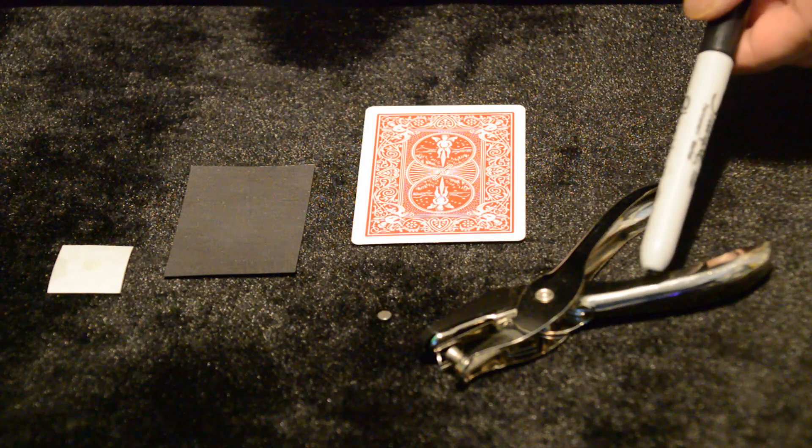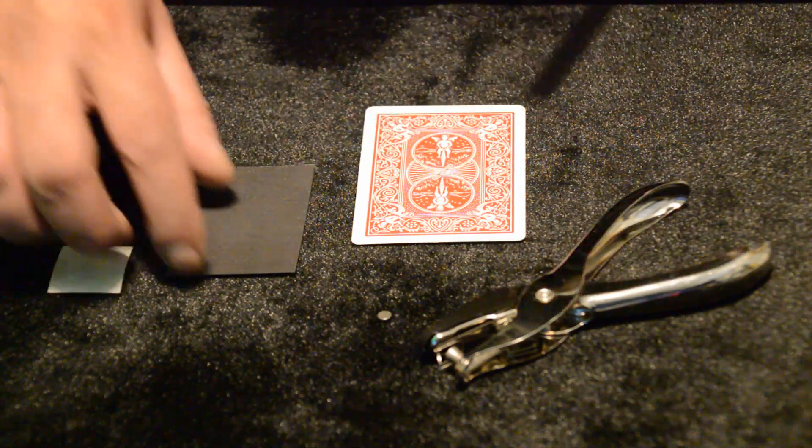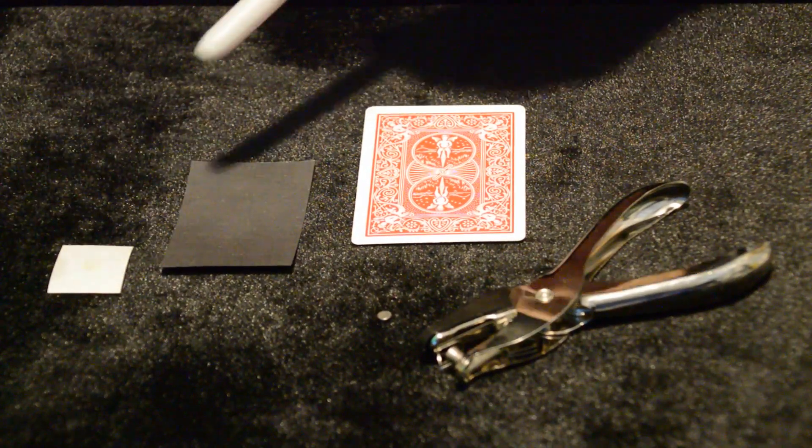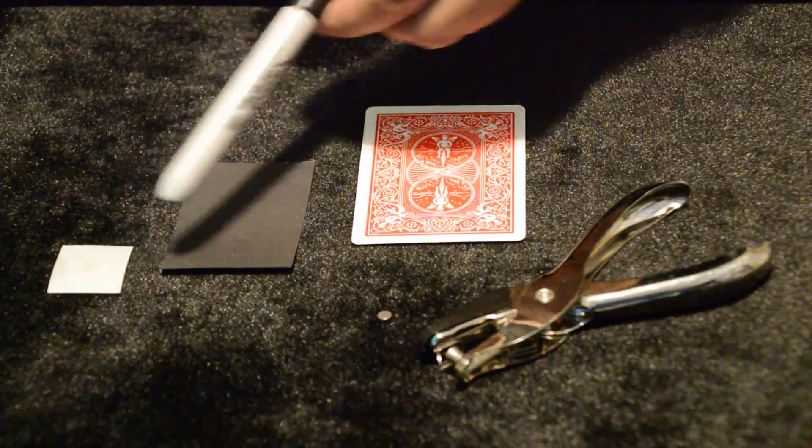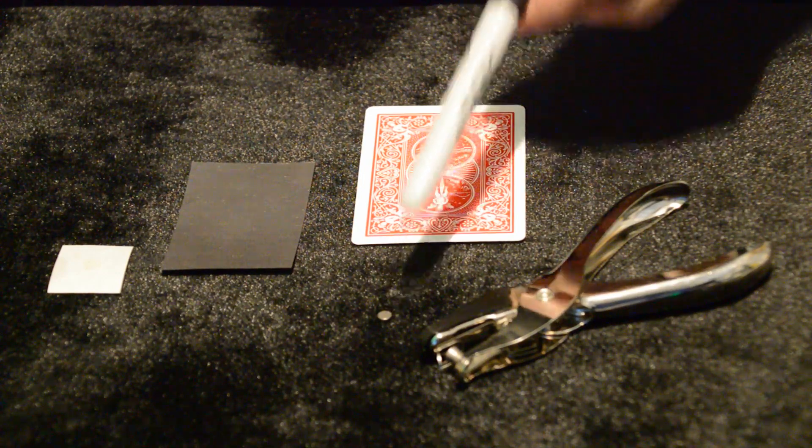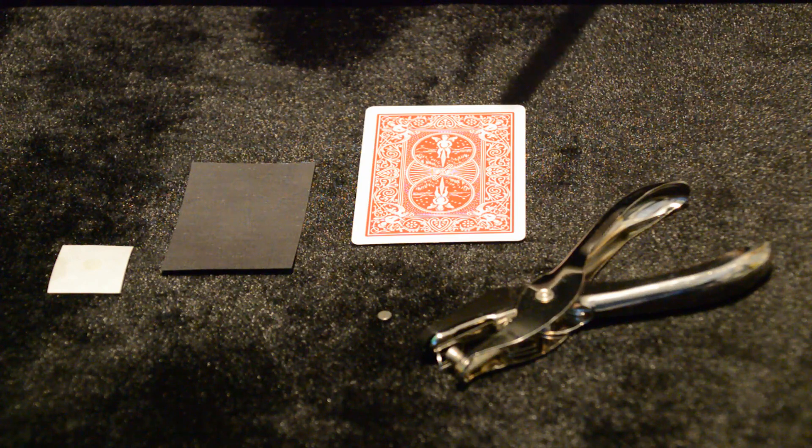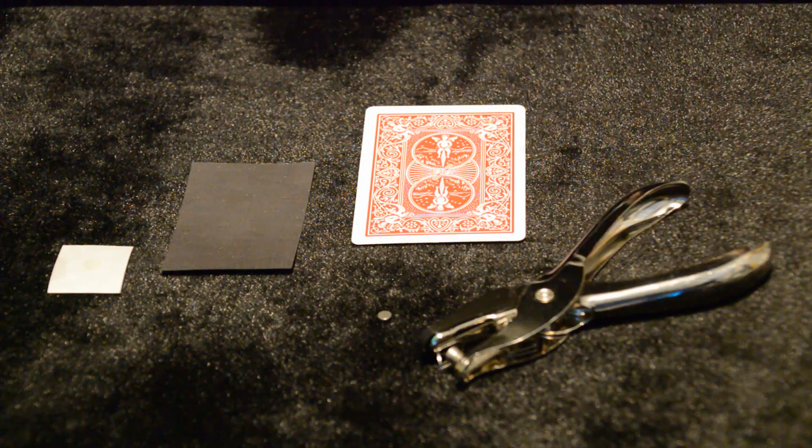For this effect, you'll need a hole punch, a playing card, a flexible magnetic shape, a glue dot, and a tiny neodymium magnet. It's a very powerful magnet, this one's about a quarter inch by 1/16th of an inch, just smaller than the hole we're going to make.